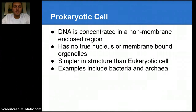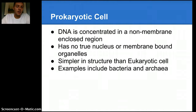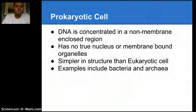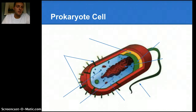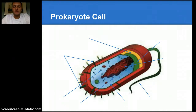It's simpler in structure than eukaryotic cells. Some good examples include bacteria and archaea — those are both good examples of prokaryotic cells. Let's look at some of the specific characteristics and features of prokaryotic cells.